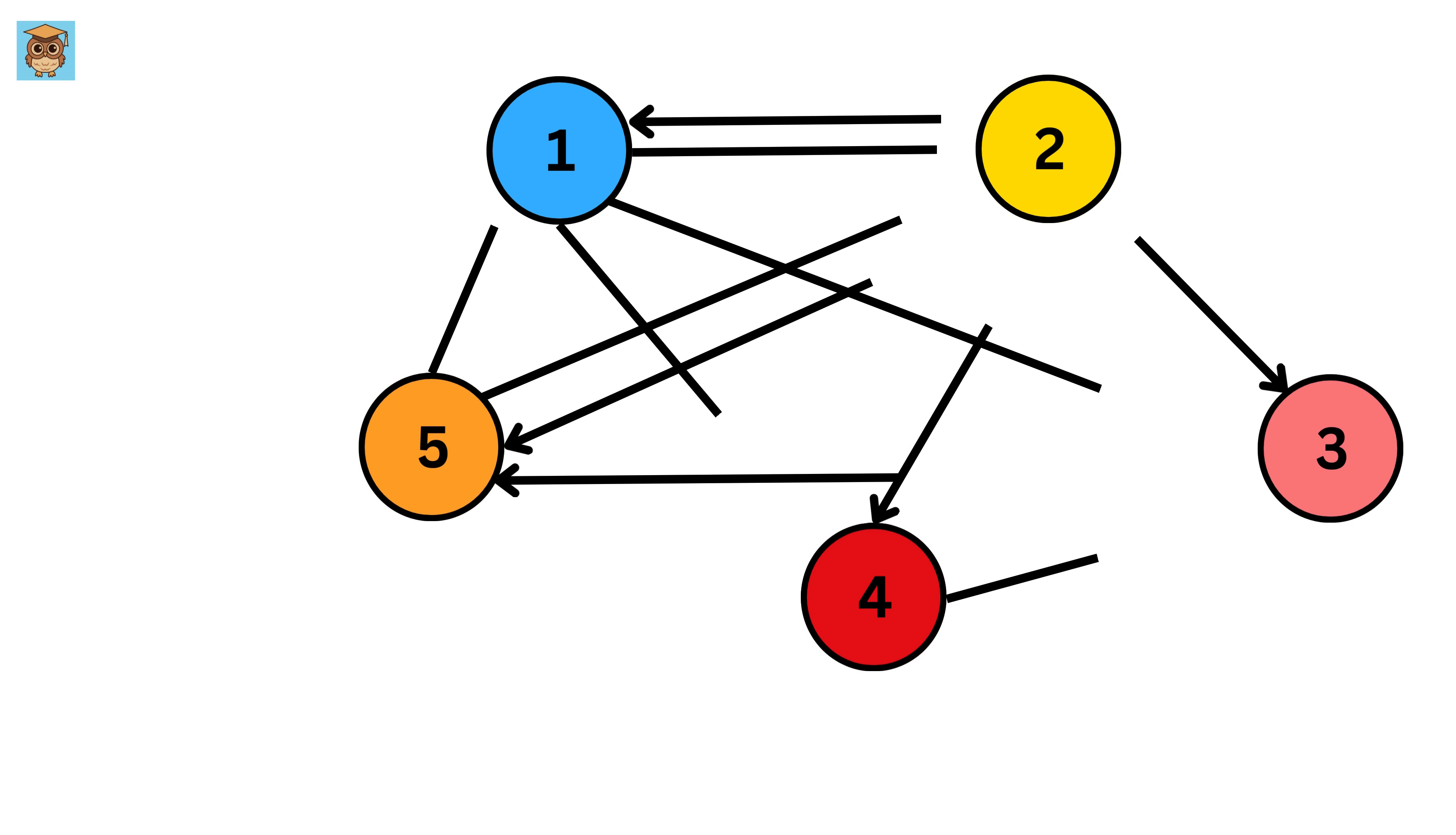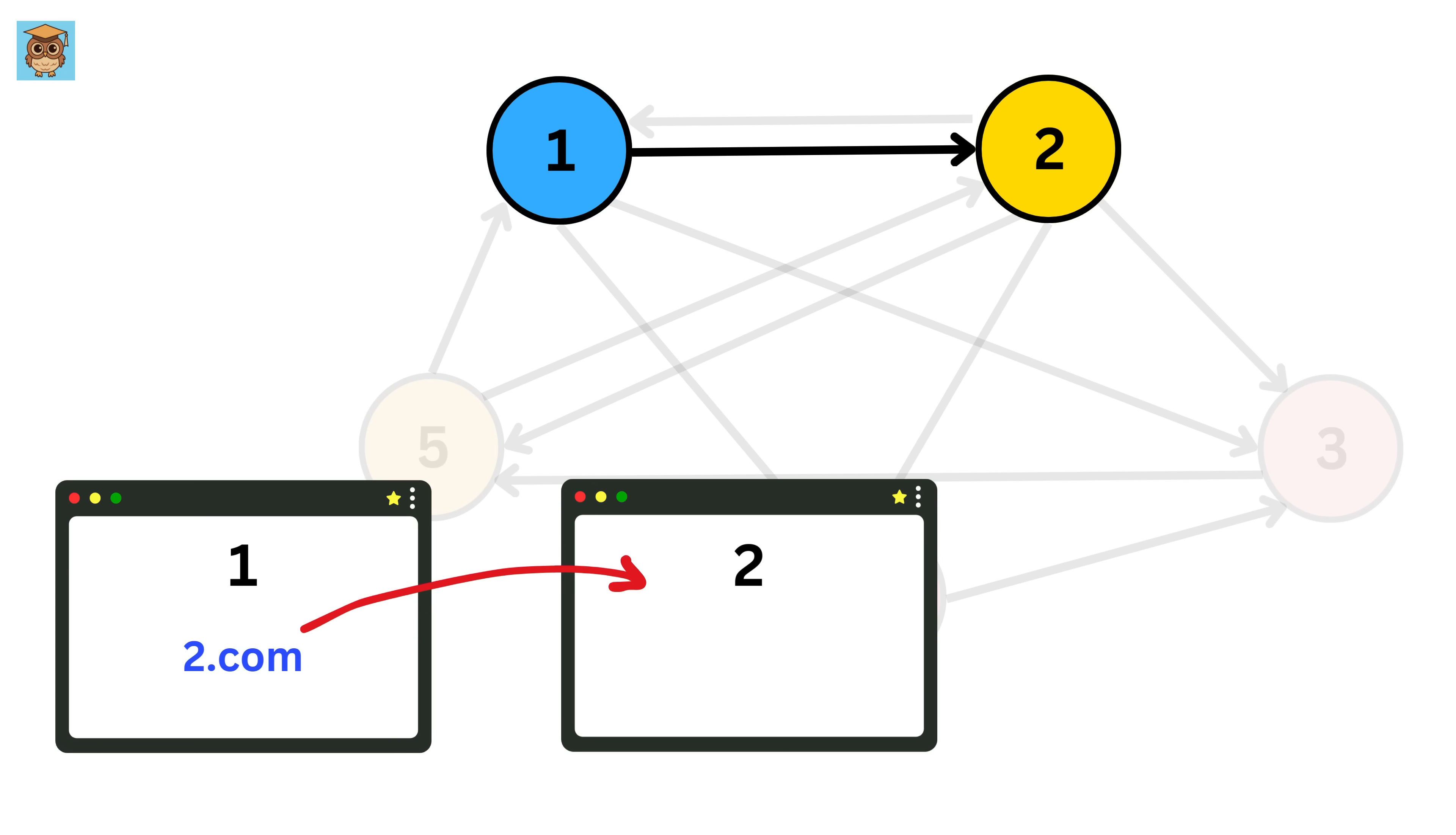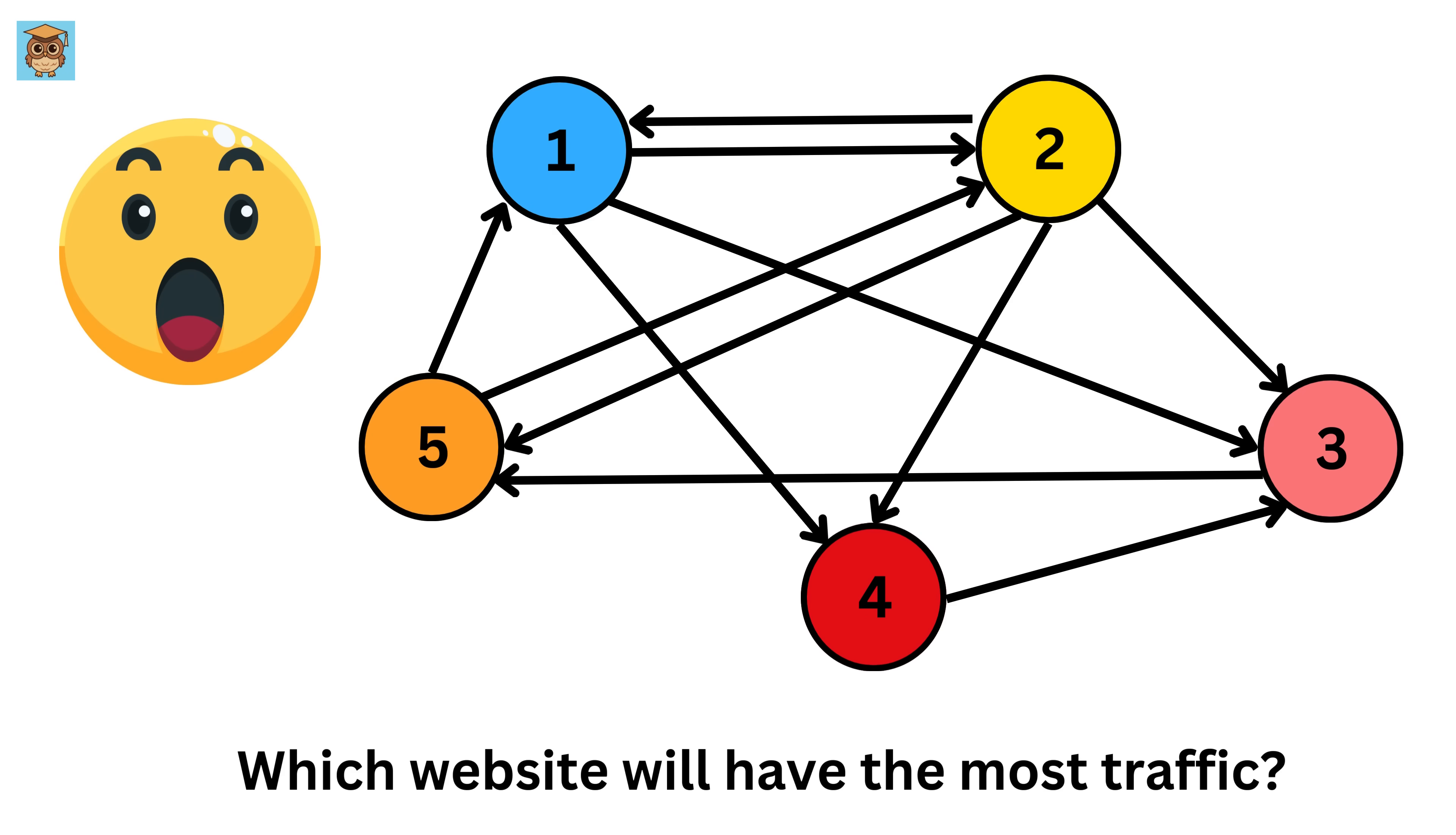Now you can see these rays between different websites. Like this ray between 1 and 2 denotes there is a link on website 1 which leads us to website number 2. Similarly, you can see a ray between website 2 and 3 which denotes there is a link on website 2 which leads us to website number 3, and this is how this structure is defined. Now the most important question here is which website will have more traffic? Isn't this an interesting problem?